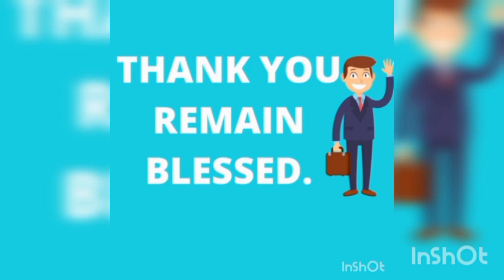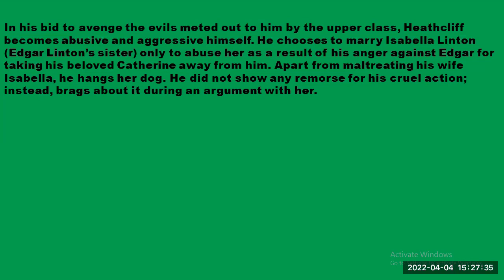When Heathcliff turns into a vindictive person, he loses his sympathy even for animals. Apart from maltreating his wife Isabella, he decides to hang her dog and doesn't even show any remorse for that cruel action. Instead, he brags about it during an argument with Isabella. This is another instance of abuse — wife abuse and animal abuse on the part of Heathcliff — and there is a dimension of violence in each case.